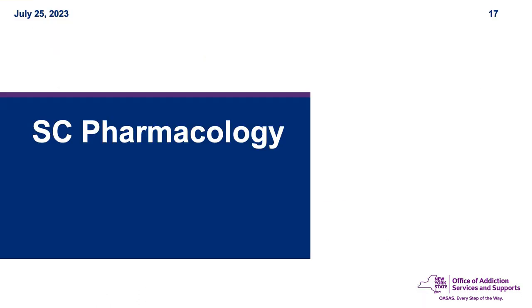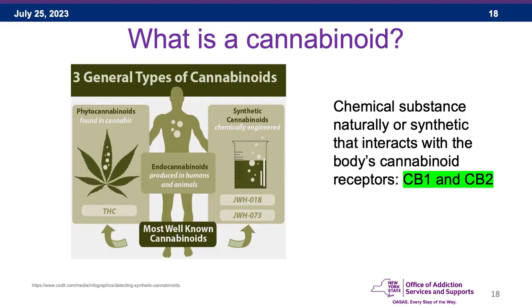Let's define what a cannabinoid is. A cannabinoid is any chemical substance — natural or synthetic — that interacts with the body's cannabinoid receptors. There are two types of cannabinoid receptors: CB1 and CB2. There are three general types of cannabinoids: endocannabinoids, which occur naturally in the human or animal body; phytocannabinoids, which occur in the cannabis plant and include THC; and synthetic cannabinoids, which are chemically engineered in laboratories.